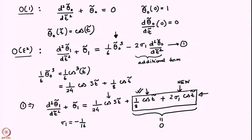This is the procedure we will follow: at every order, the additional expansion for sigma introduces an extra degree of freedom — a coefficient whose value is unknown. However, that term will be proportional precisely to the resonant forcing term at every order. So by choosing the value of that unknown coefficient such that all resonant forcing terms at that order are cancelled, one can systematically eliminate the resonant forcing terms at every order. In particular this also determines the expansion for sigma. We have already found that sigma_1 = -1/16. These coefficients are nothing but the nonlinear corrections to the frequency of the pendulum.